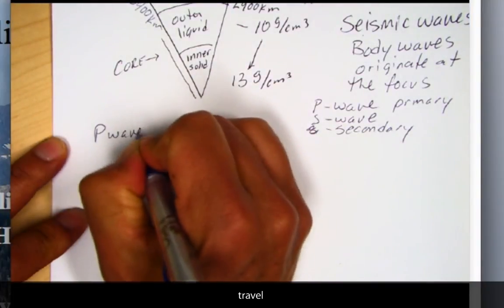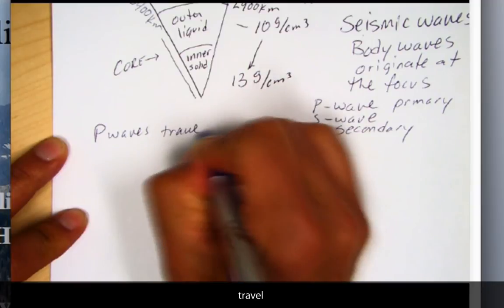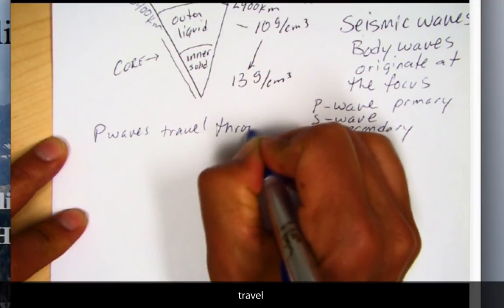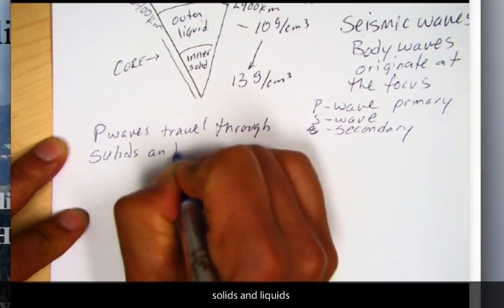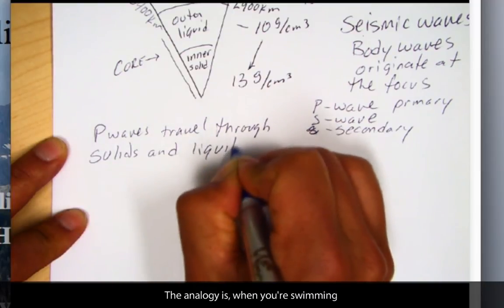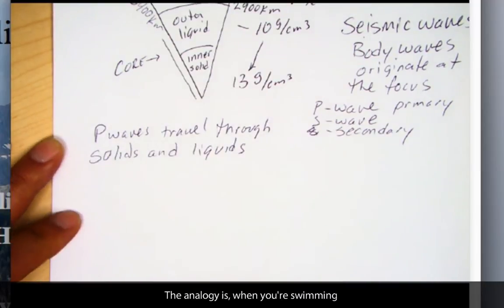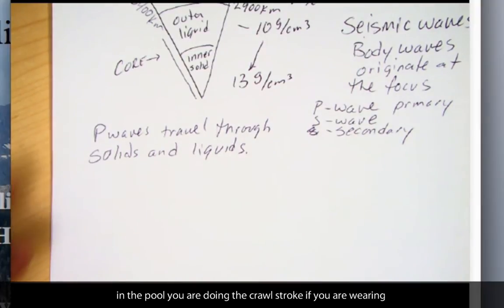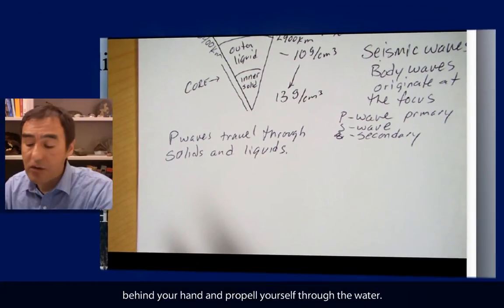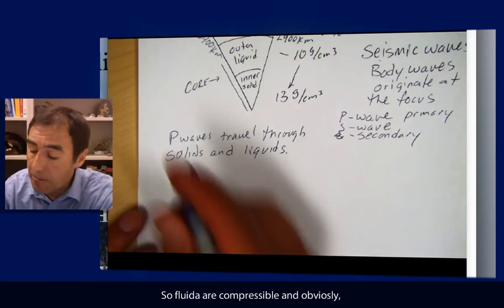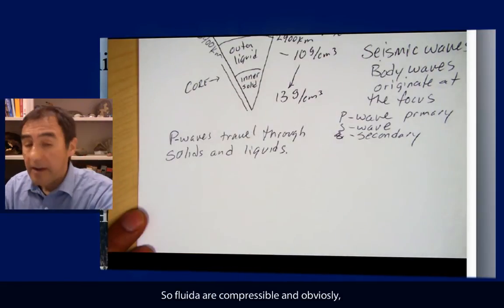That's a P wave. And one thing we should add about the P wave is that P waves travel through both solids and liquids. The analogy I make when you're swimming in the pool, you're doing the crawl stroke. If you are wearing webbed gloves, you can compress more water molecules behind your hand and propel yourself through the water. So fluids are compressible. And obviously solids are as well.